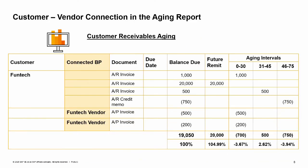You can display connected vendor data in the customer receivables aging and connected customer data in the vendor liabilities aging. To do so, check the 'Consider connected vendors/customers' box on the selection criteria window. A connected customer or vendor is used when a business partner is both customer and vendor. Once connected, you can clear open debts of the customer with the open debts for the vendor. In the image you can see both AR invoices for Funtech the customer and AP invoices for Funtech the vendor, with the total balance taking the AP invoices into consideration.